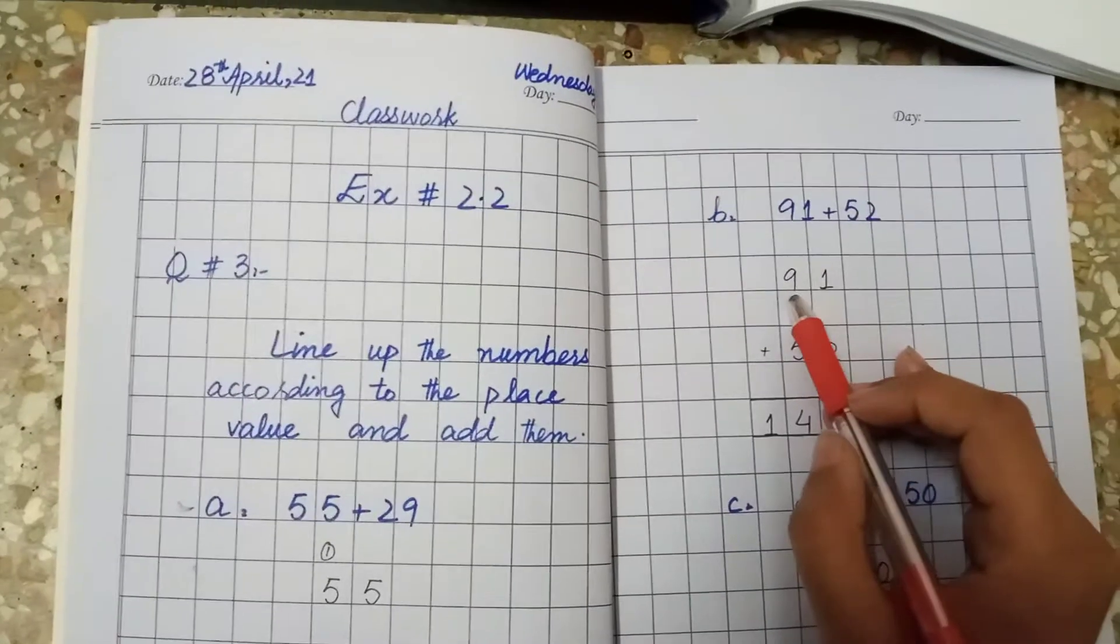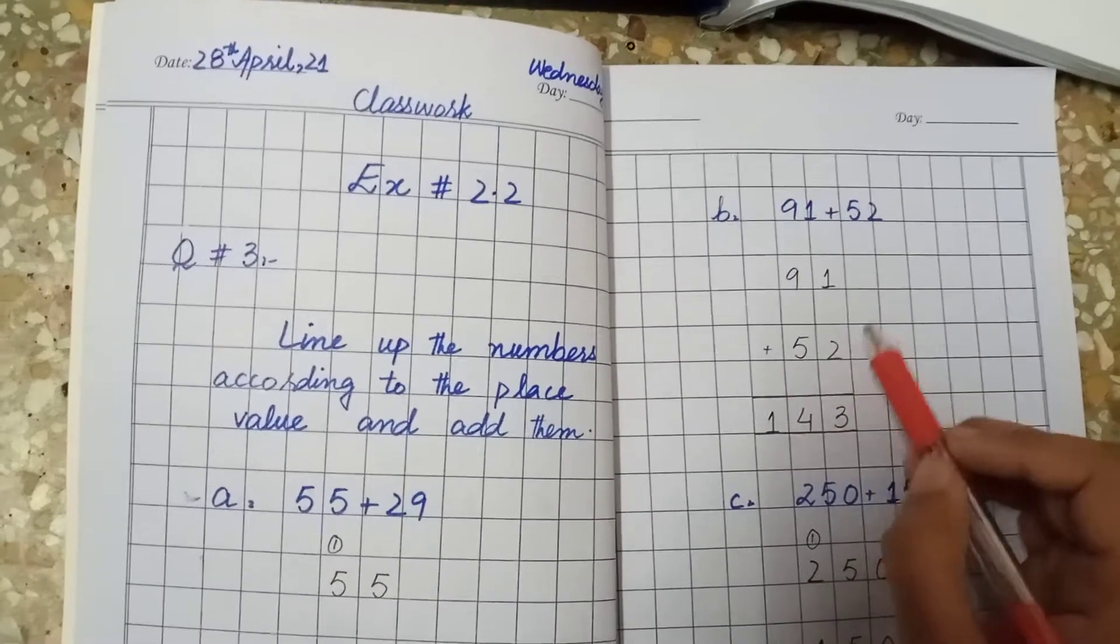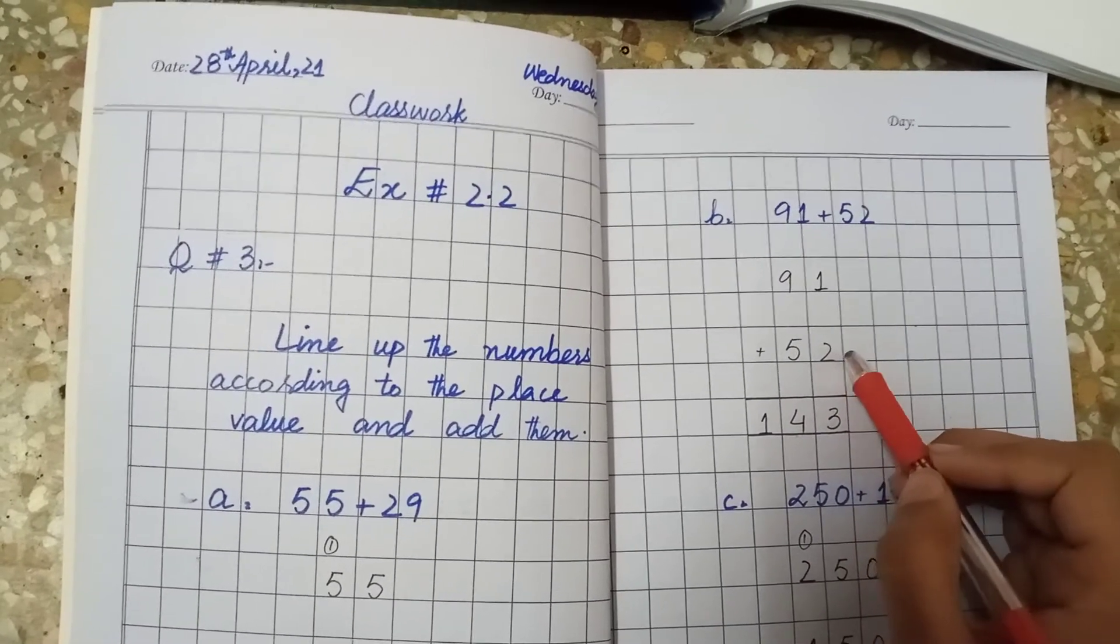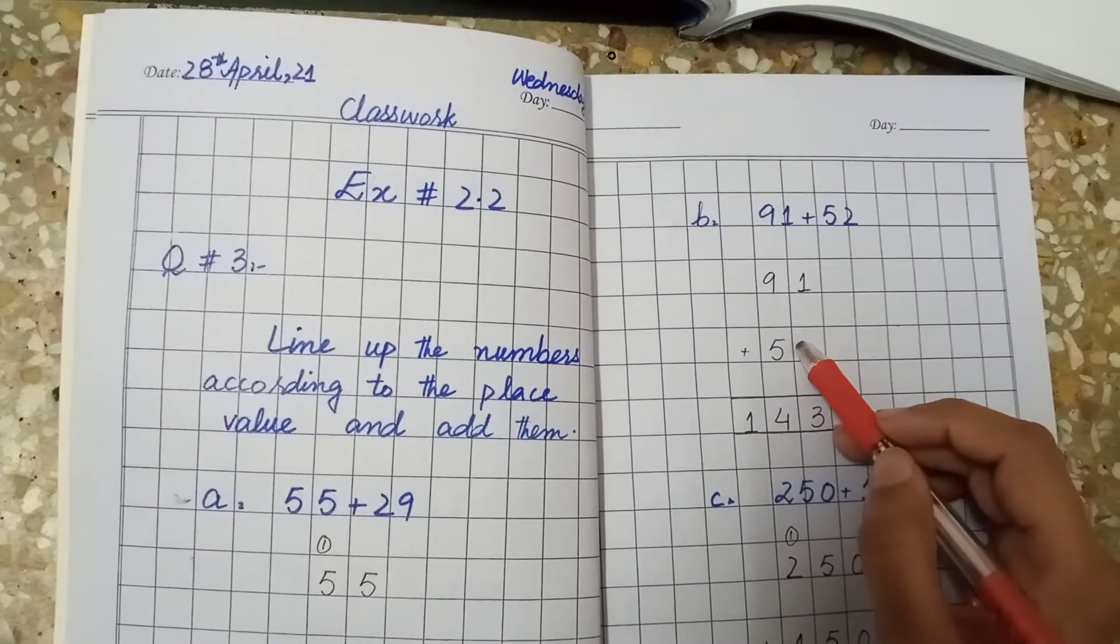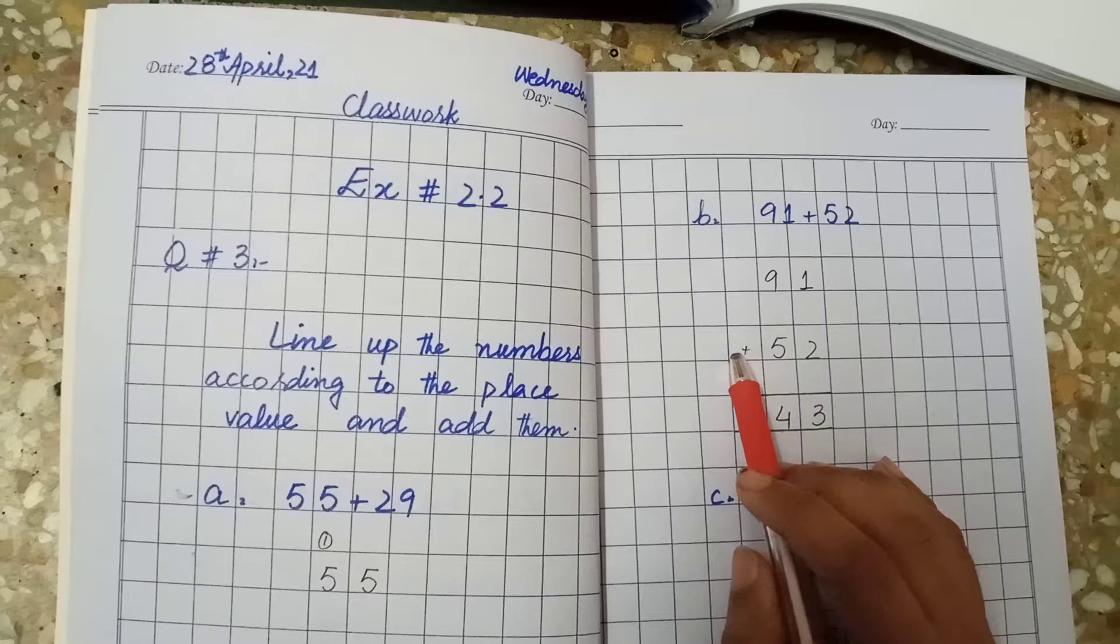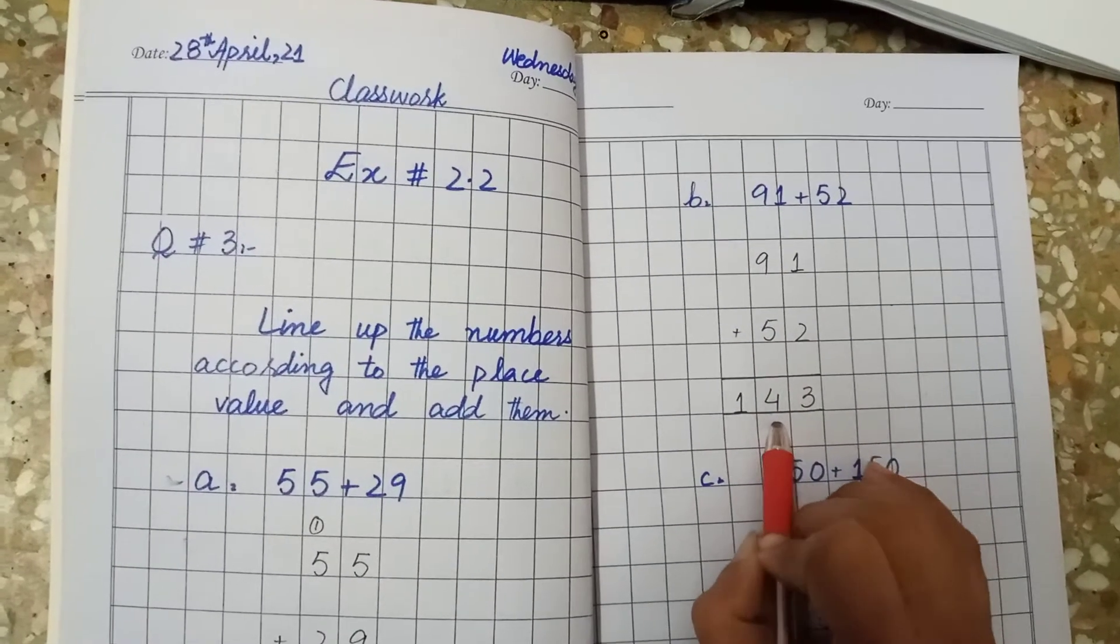Now the B part is 91 and 52. We will start it from the right side. 2 and 1 makes 3, 9 and 5 makes 14. There is no value, so we will write here 14 like this.